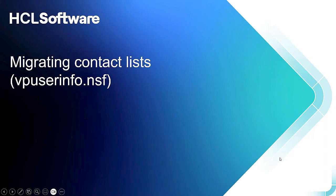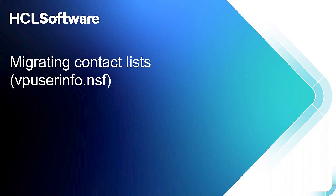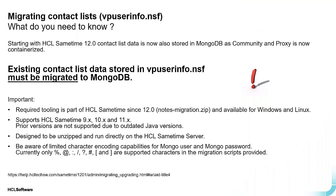A critical migration requirement when coming from an earlier version of Same Time is migrating contact lists — also known as buddy lists — from the VP user info.nsf Domino database to MongoDB. As of Same Time 12.0, the community and proxy server are containerized, which requires this migration. The data moves into the same MongoDB database used for persistent chat. Without this migration, Same Time will start with no buddy lists, which is typically not acceptable.